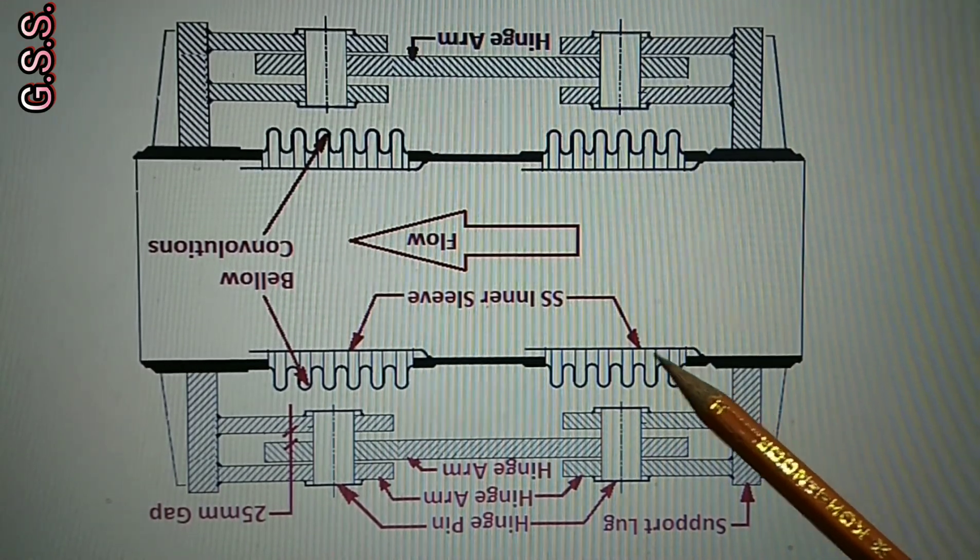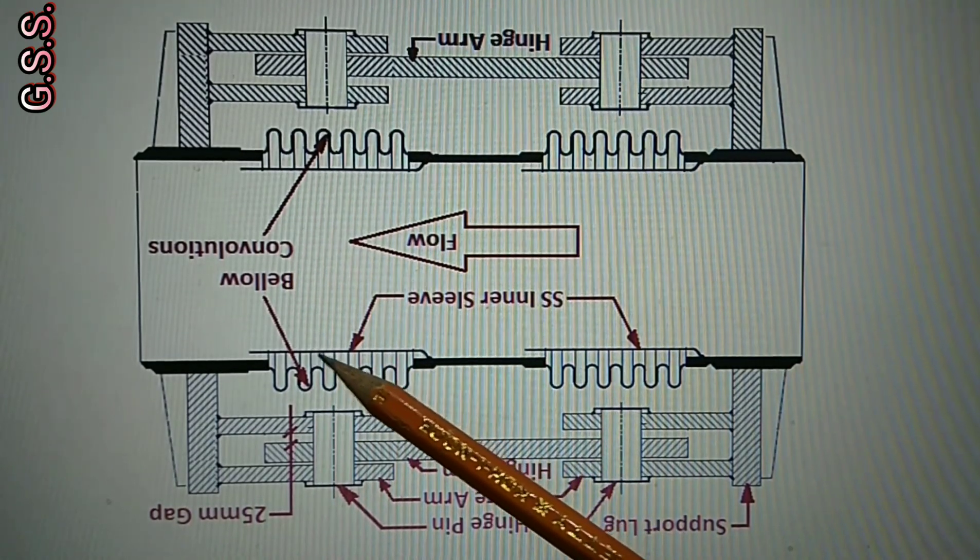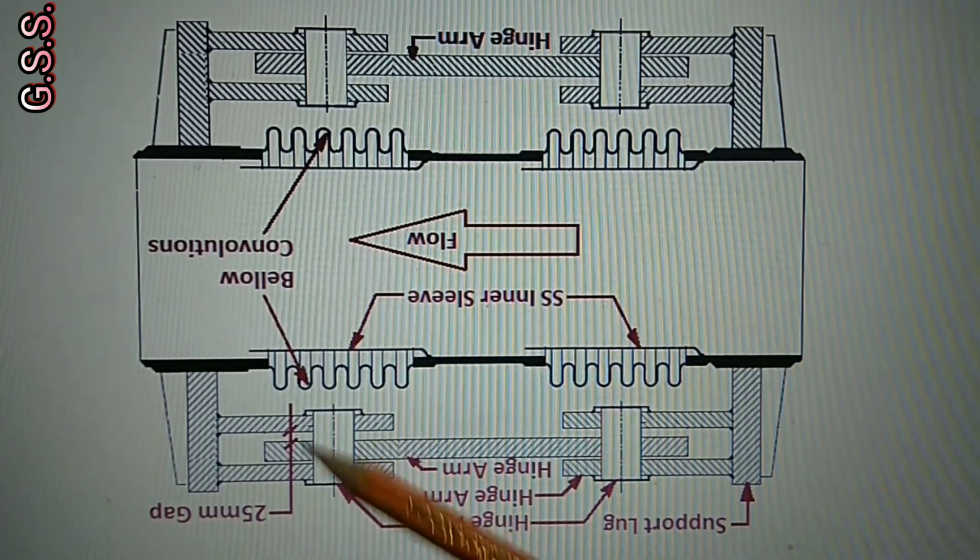SS inner sleeve is also there to protect the bellows convolution from direct impingement of flow.